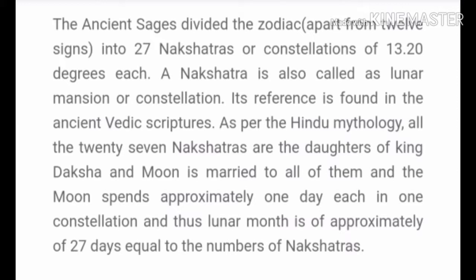So that is how Nakshatras came into being: you divide the Zodiac Belt of 360 degrees by 27 and get 27 arcs of 13 degrees 20 minutes, each known as a Nakshatra. As we saw earlier, there are 12 houses in Vedic Astrology, and each of these houses contains two or more Nakshatras. For example, Makar Rashi contains Uttarashada, Shravan and Dhanishta Nakshatra.